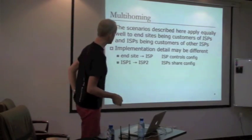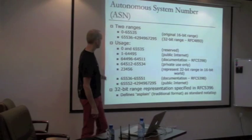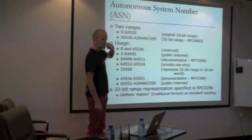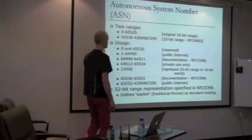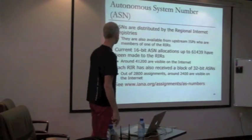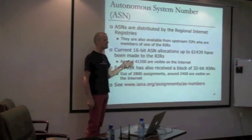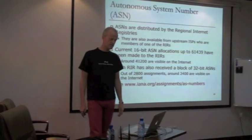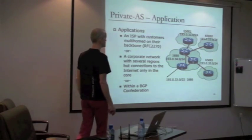To multihome we need an AS number - 32-bit range. Multihoming to the same AS, we use a private AS number. Multihoming to different ASes, we use one of the public numbers. Get them from the registries. Allocations up to 64,000 have been made, about 41,000 visible on the internet, and about 2,800 32-bit AS numbers visible on the network. Private ASes are used for ISPs multihoming to the same upstream - so you connect them to the same upstream provider. RFC 2270 describes how to do this.